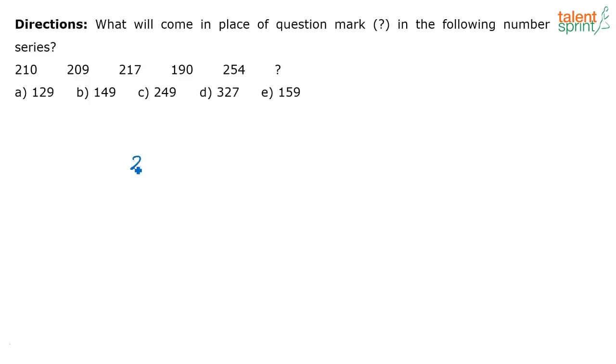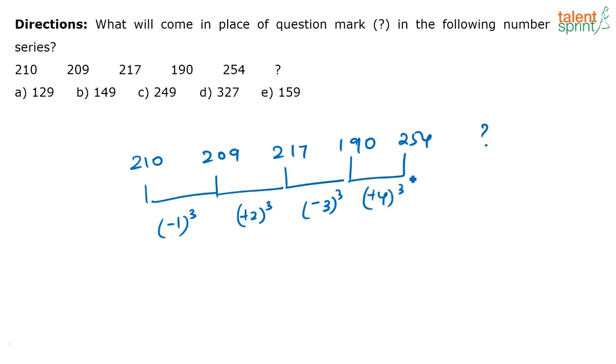So the logic that is being followed here is this. 209, this is minus 1 the whole cube, right? This is plus 2 the whole cube and this is minus 3 the whole cube, correct? This is plus 4 the whole cube. So the next one should be minus 5 the whole cube.